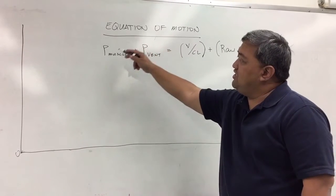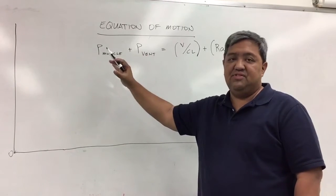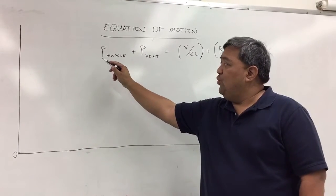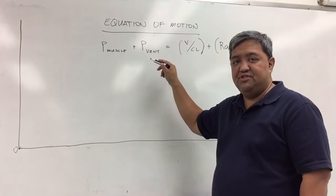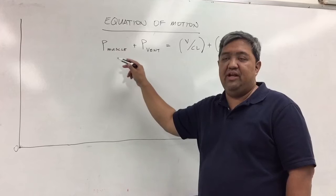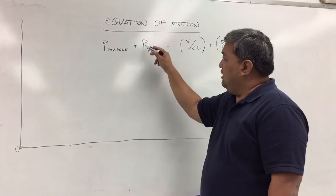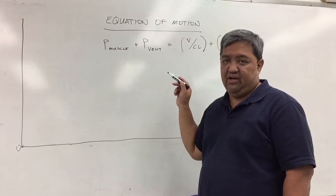The equation of motion states that on the left side it's all about the pressure, whether it be the pressure submuscle or the pressure sub vent. This pressure is generated by the patient, and this pressure is generated by the ventilator.